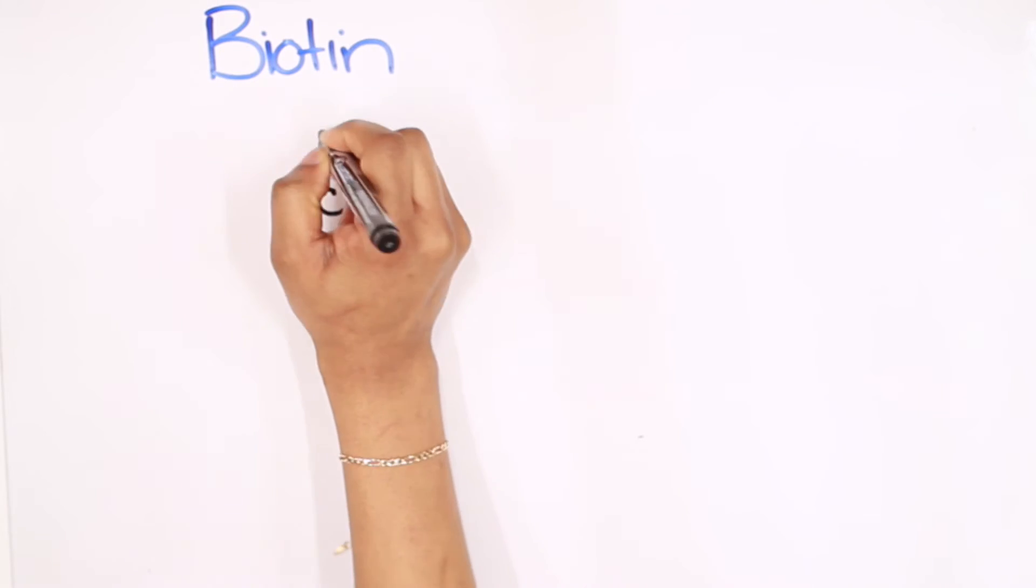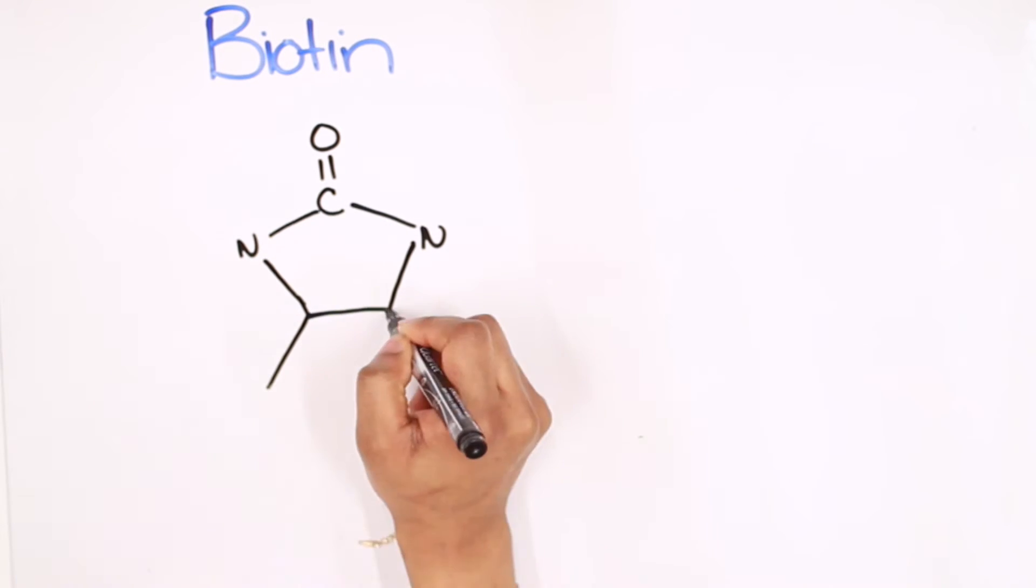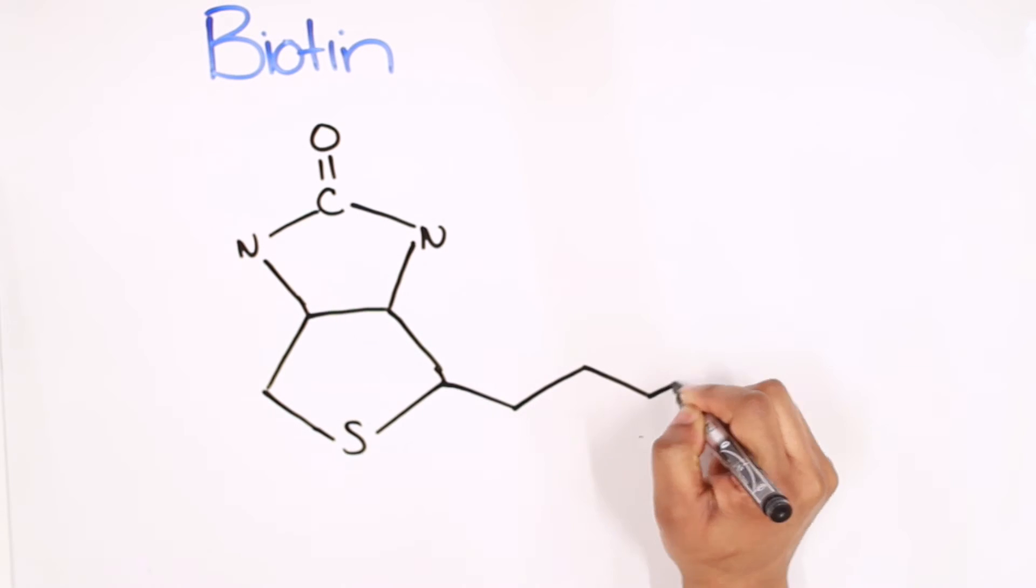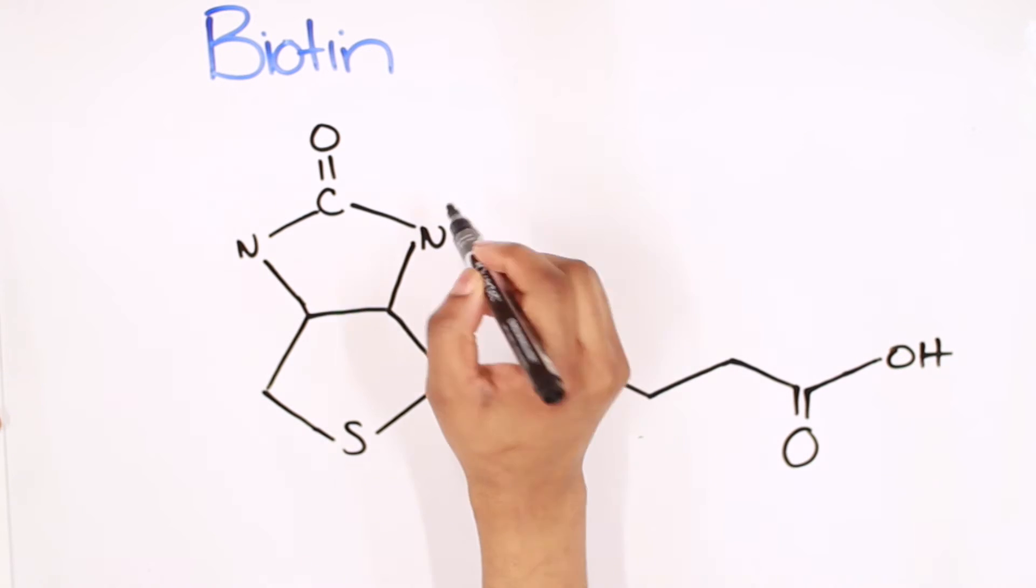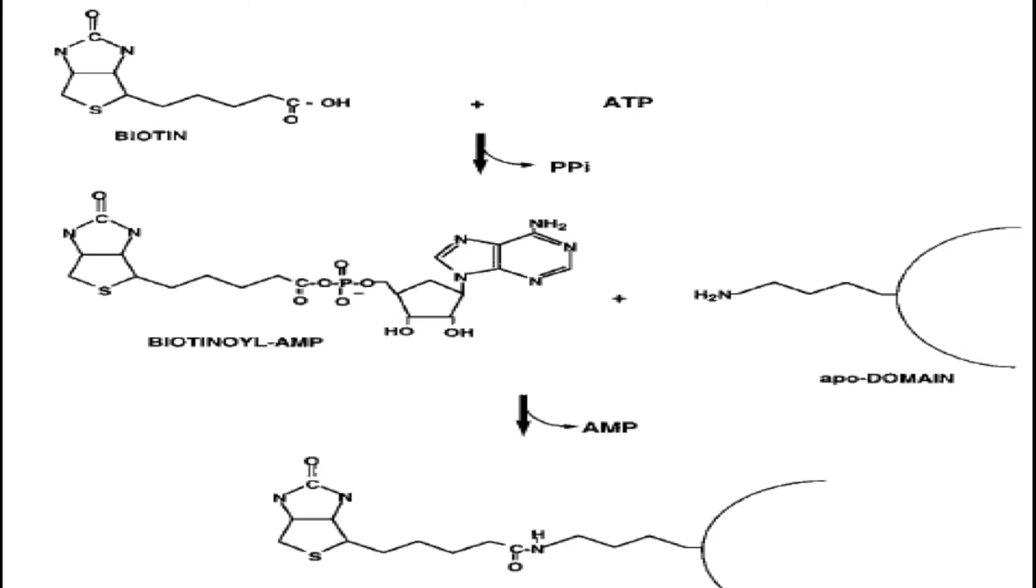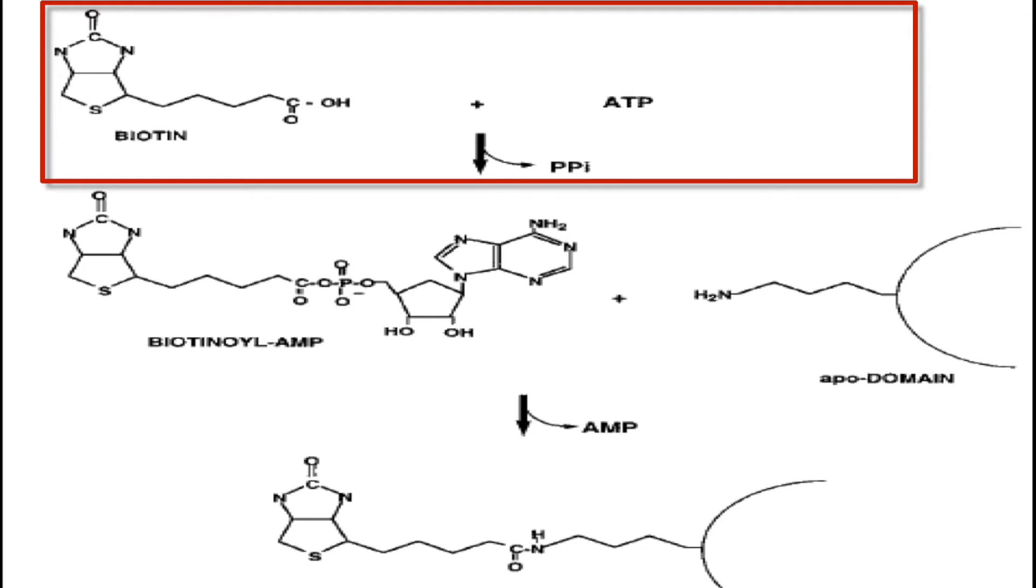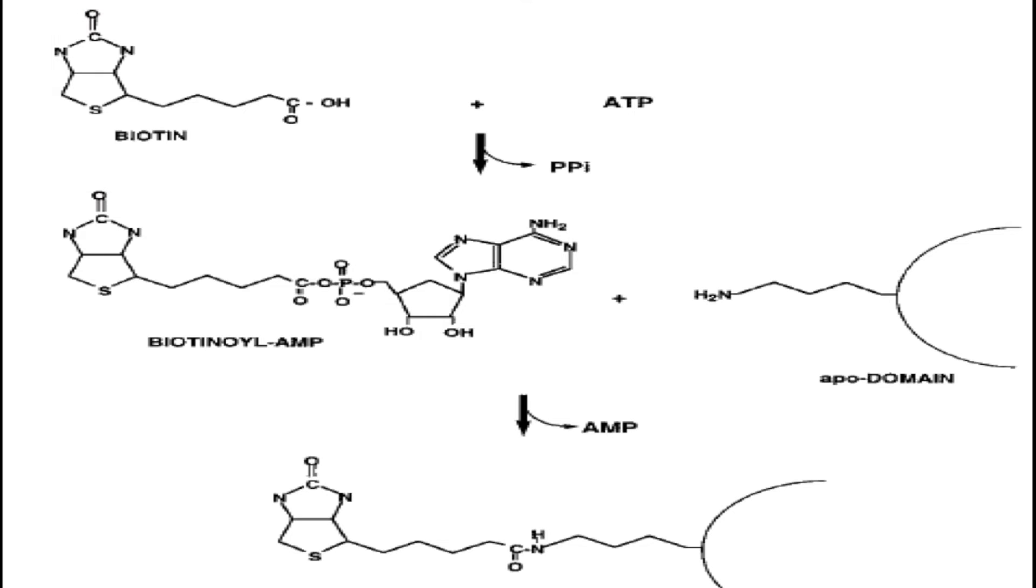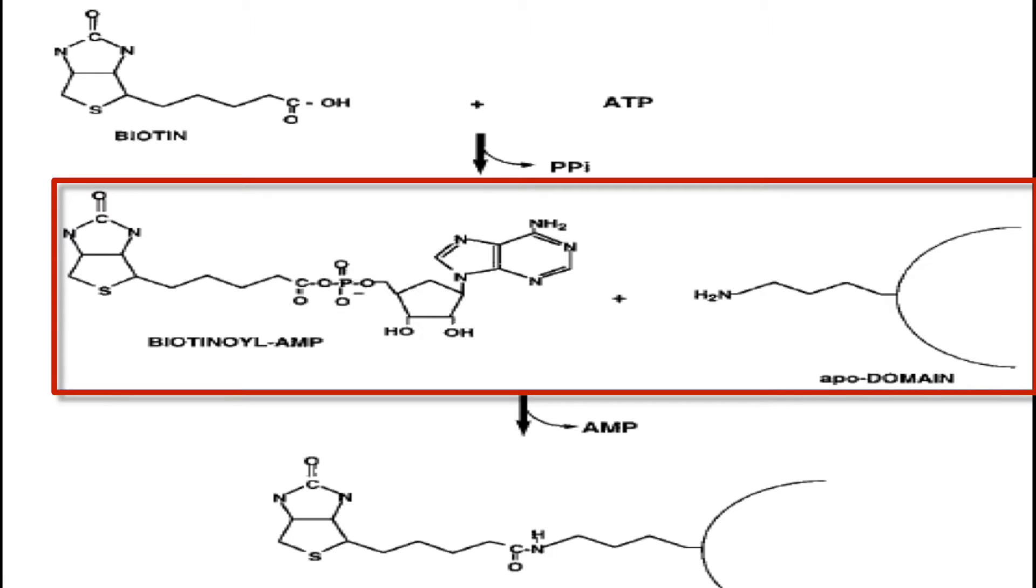Also known as vitamin H, biotin is a coenzyme that is covalently attached at the active site of a specific group of proteins called the biotin carboxylases and decarboxylases. Fun fact, it is also used as a skin conditioning agent. The addition of biotin to its target protein is a two-step reaction catalyzed by the biotin protein ligase. In the first step, the biotin molecule is activated by ATP, and in the second step, the activated biotin molecule is attached to a free amine group of the target protein, usually a lysine amino acid.